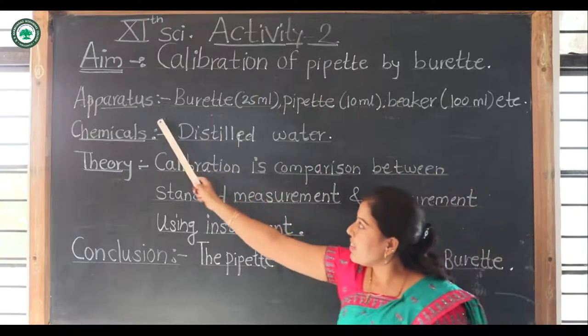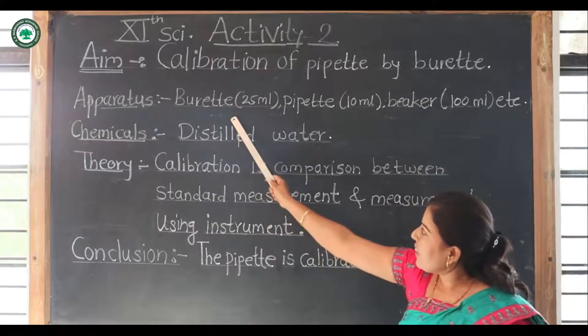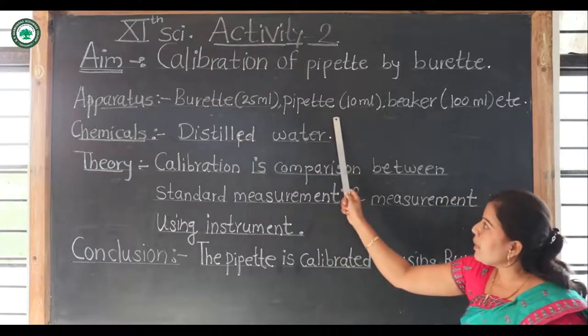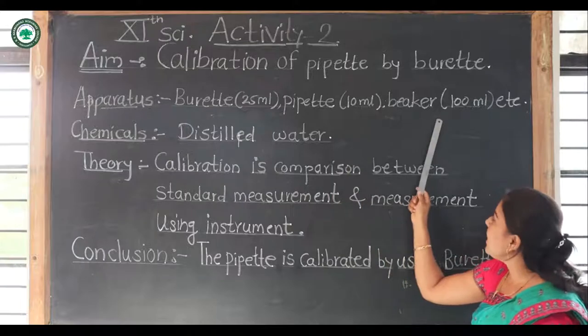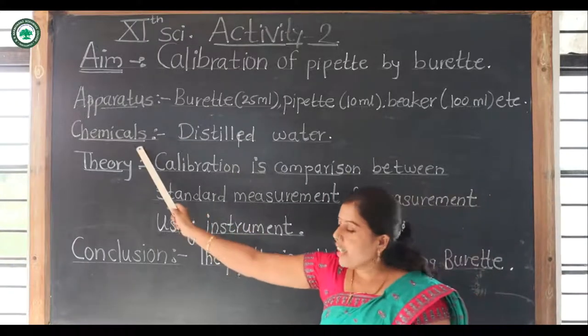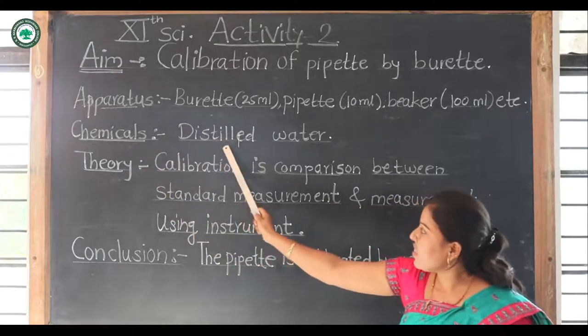Apparatus required for this activity: 25 ml buret, then 10 ml pipette and 100 ml beaker, etc. Chemical required for this activity: distilled water.